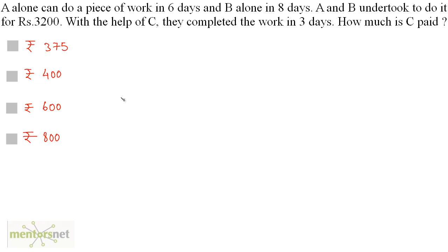A alone can do a piece of work in 6 days and B alone in 8 days. A and B undertook to do it for Rs 3,200. With the help of C, they completed the work in 3 days. How much is C paid?